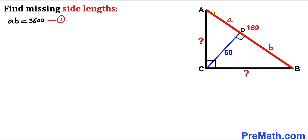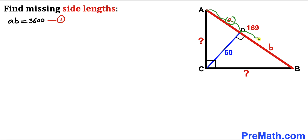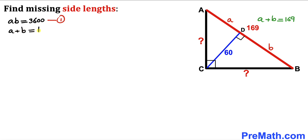Now let's make an observation: this whole side length AB equals 169, and furthermore AB is the sum of the two individual segments a and b. So therefore I can write a plus b equals 169. Let's call this equation number 2.